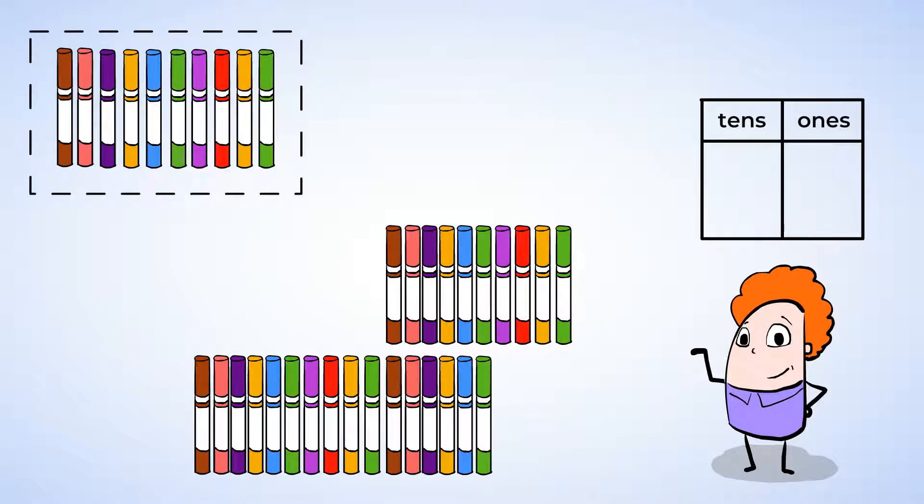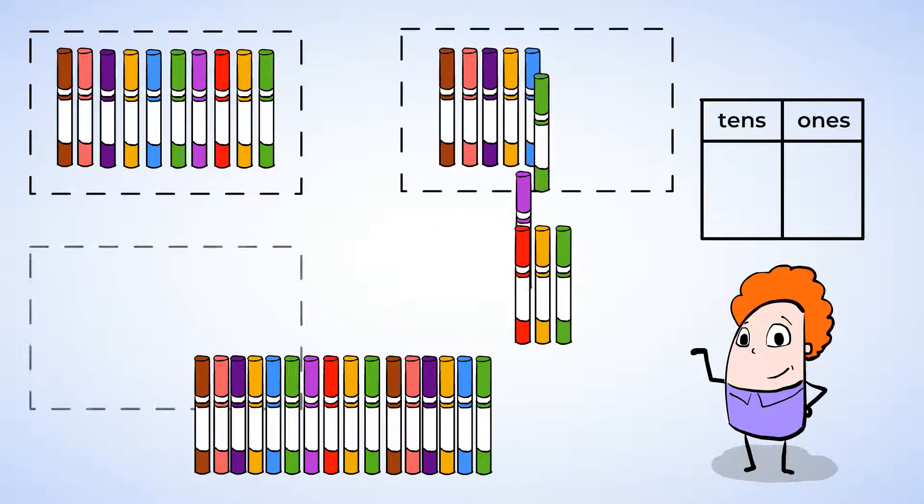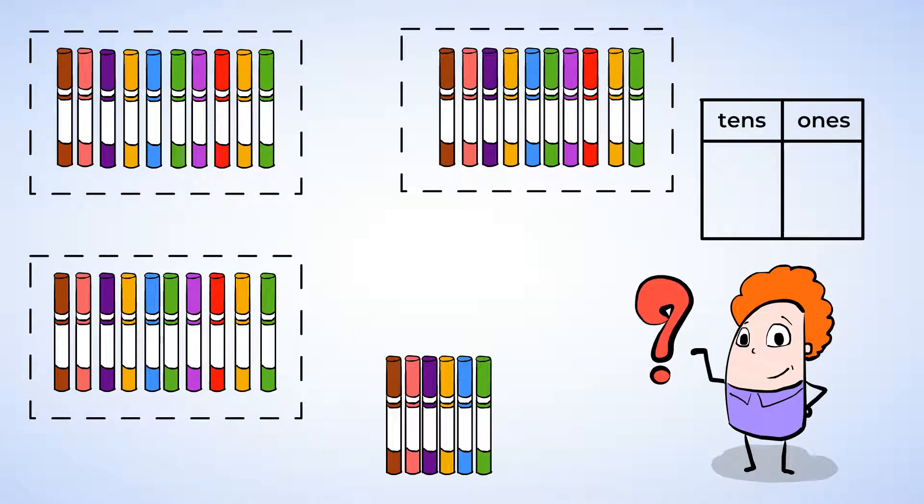It looks like we have enough markers to make more groups of 10. What do you think? Let's try. Here's another group of 10, and another group of 10. How many groups of 10 do we have now? 3, or 3 10s. Write the number 3 in the chart in the 10s place.